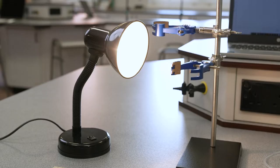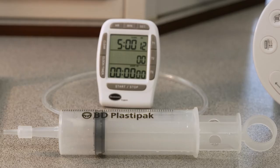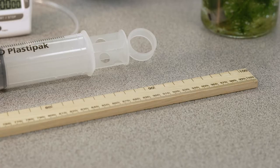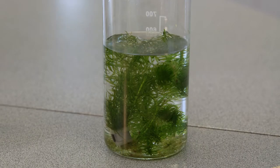Remember you'll also need a light source such as a desk lamp, a syringe and a stopwatch, a meter ruler and a six centimeter piece of pondweed which you can get from most aquatic stores.